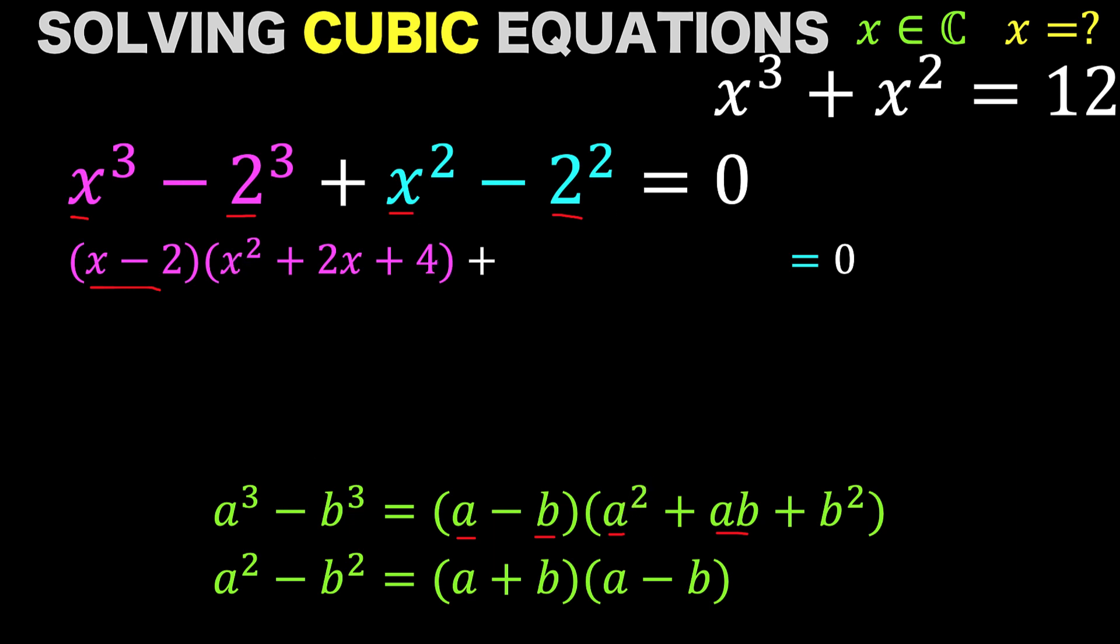Now for this blue part, that is the difference of two squares, that is equal to this form. So we have the quantity (x + 2) times the quantity (x - 2). Where our a is x, our b is 2. We copy the right side.